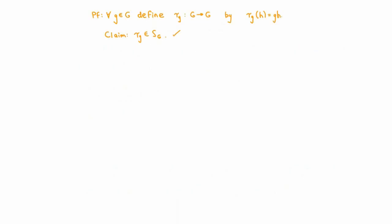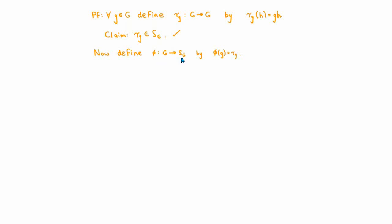For the second part of the proof, let's define a map φ from the group G to the symmetric group on G by the rule that φ of any element little g equals the map τ_g. We're going to show that this map φ is a homomorphism and also that it's injective. That will imply that G is isomorphic to its image, giving us the statement of Cayley's theorem.